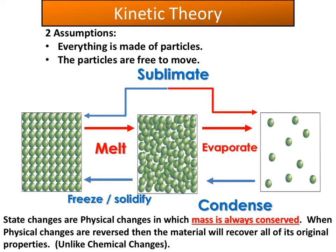We can start with solids, which can become liquids, and eventually become gases. If we heat solids up — which have a nice regular structure — they will melt to form a liquid. If we continue to heat the liquid, it will evaporate and become a gas. Starting with a gas and cooling it down, it will condense to become a liquid, and then freeze or solidify to become a solid again.